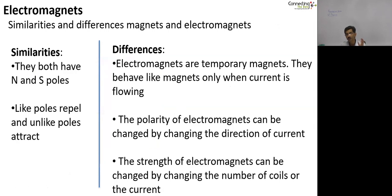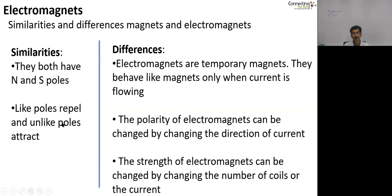Let us understand some of the differences and similarities between magnets and electromagnets. We have seen a couple of similarities already through simple experiments: one is that both permanent magnets and electromagnets have north and south poles, and we also observed that like poles repel each other and unlike poles attract each other. So those are the similarities. What are the differences?